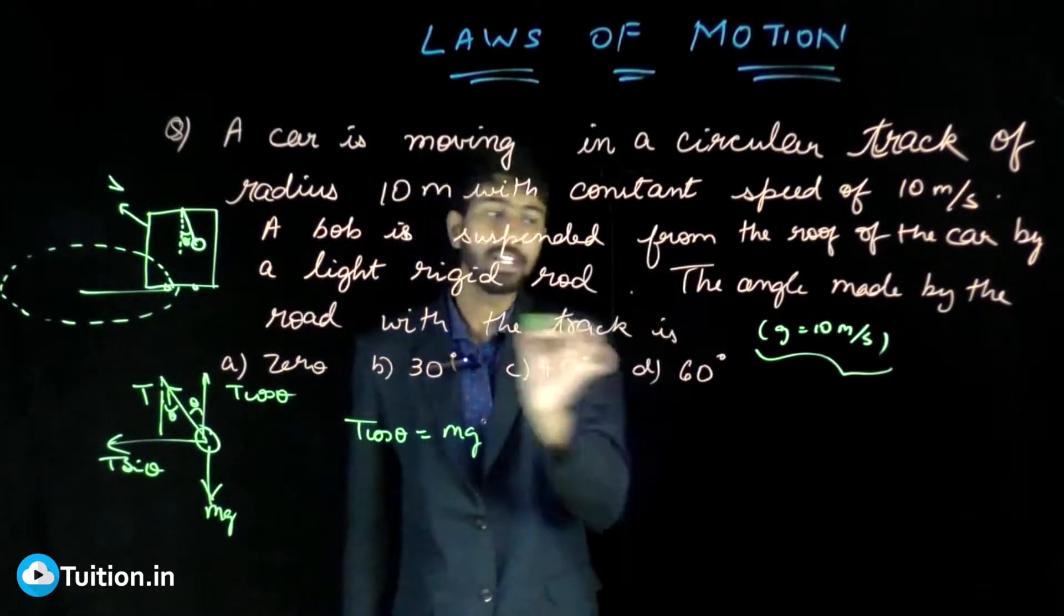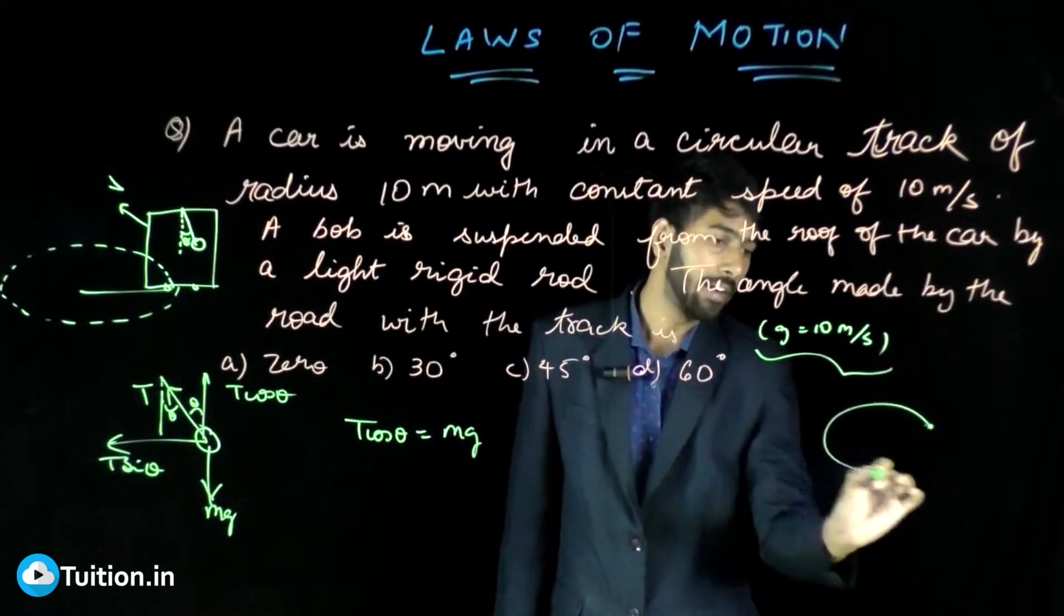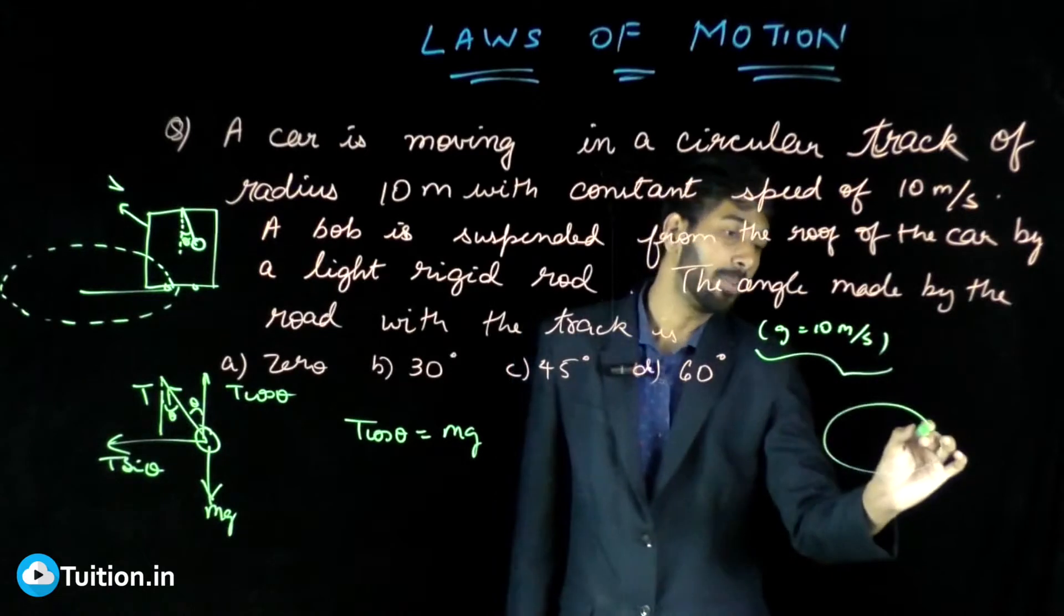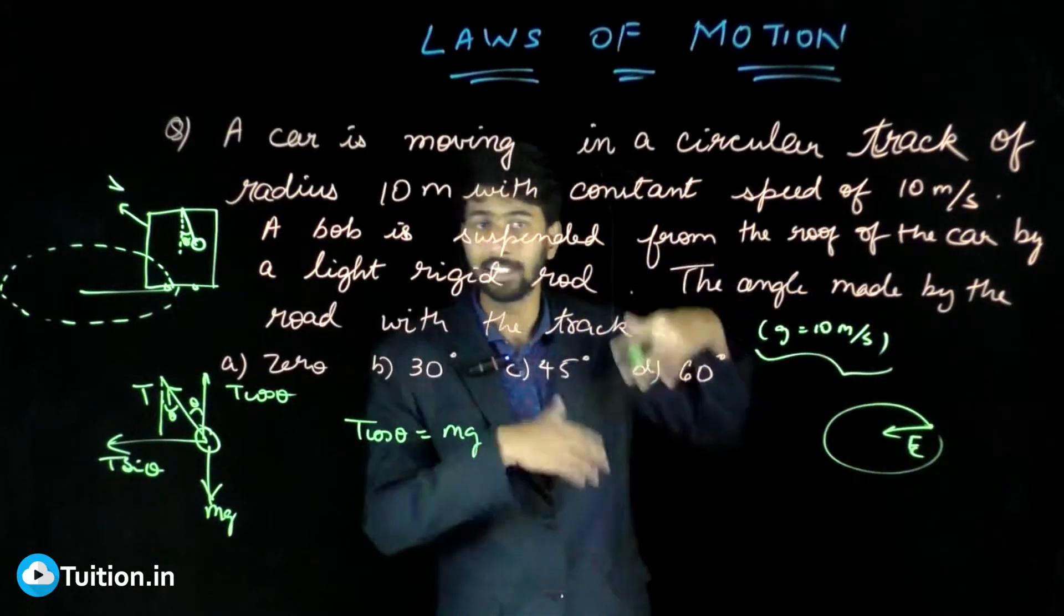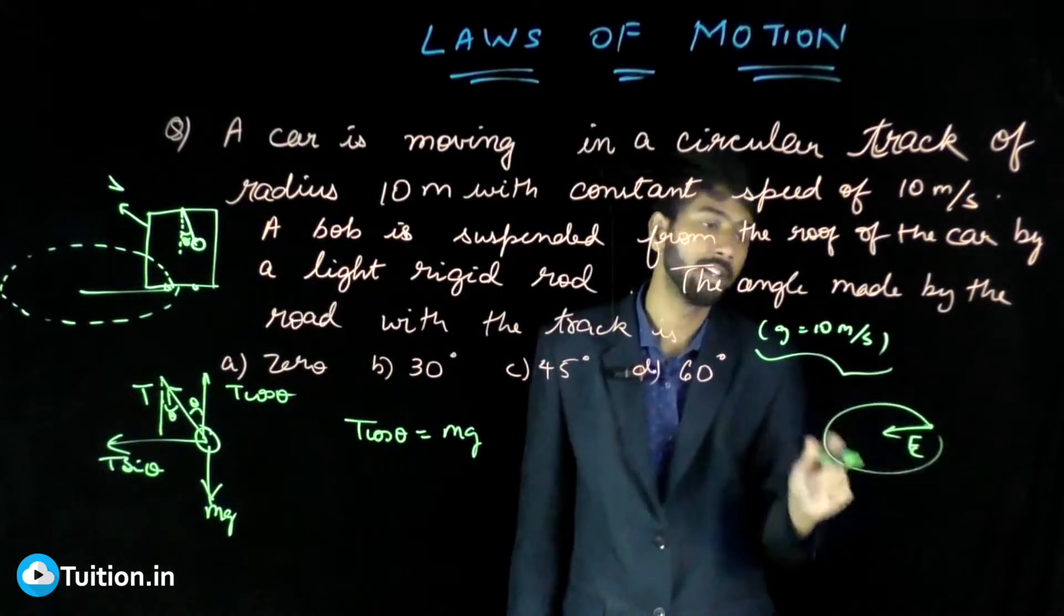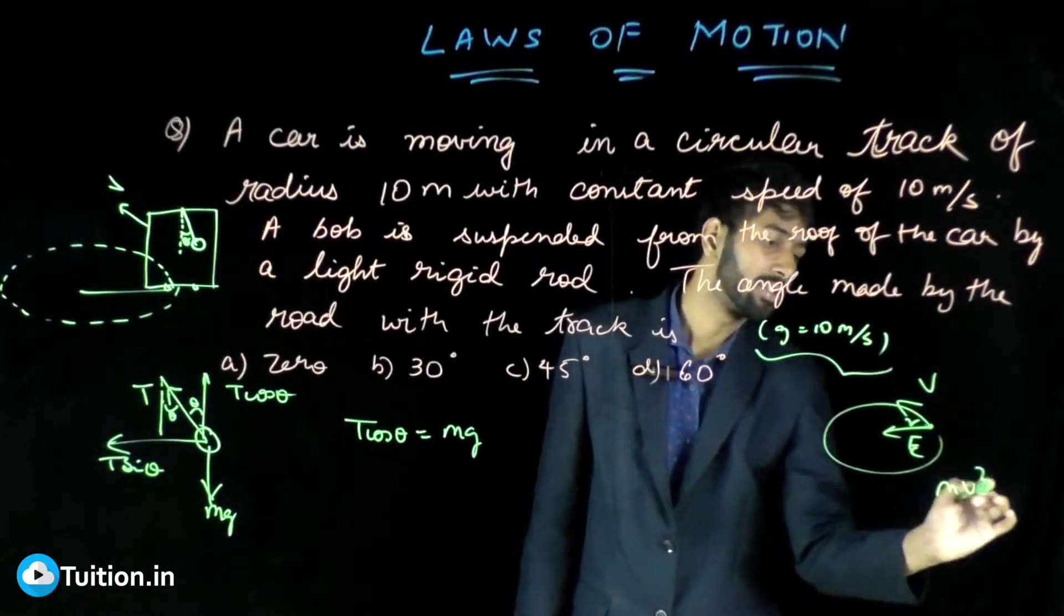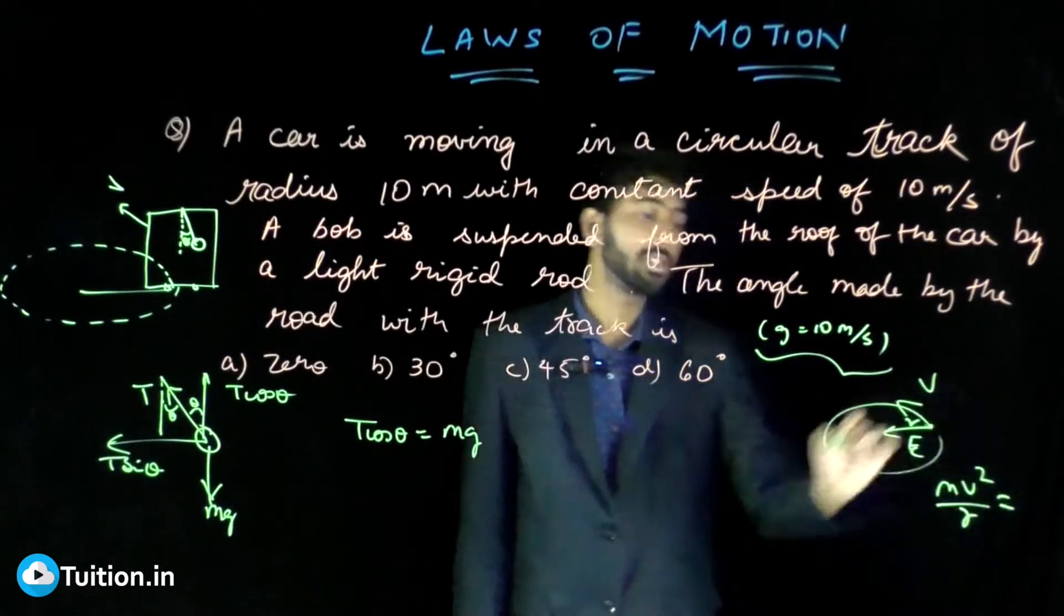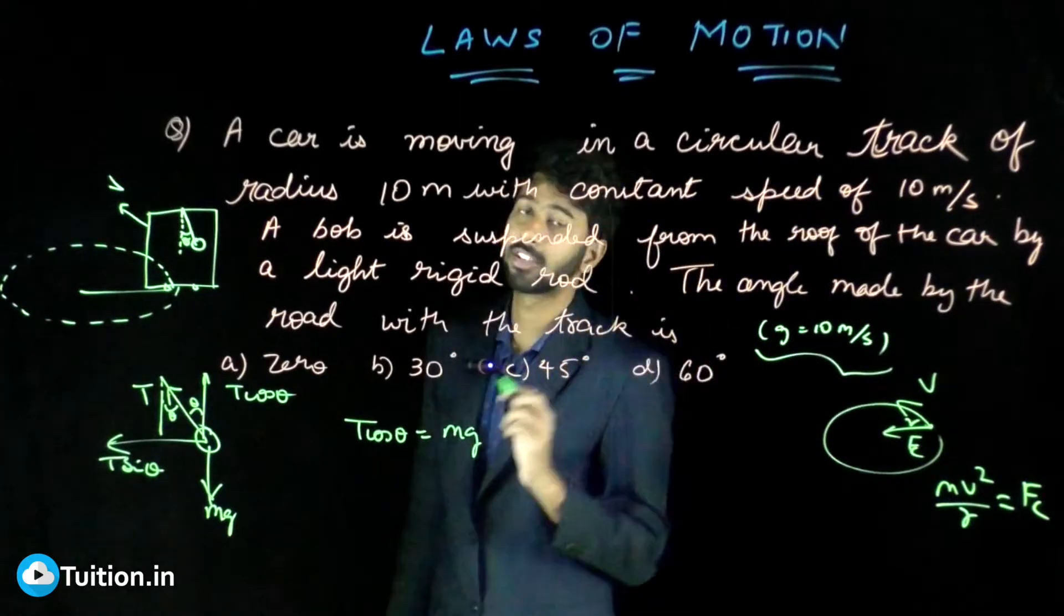Remember, if any body has to be in circular motion, if I have this small point and I have to rotate it in a circle, I have to provide some centripetal force. If it moves with velocity V and radius is r, then centripetal force required is mv²/r, which is always provided by some external force. It can be frictional force, it can be tension, it can be anything.